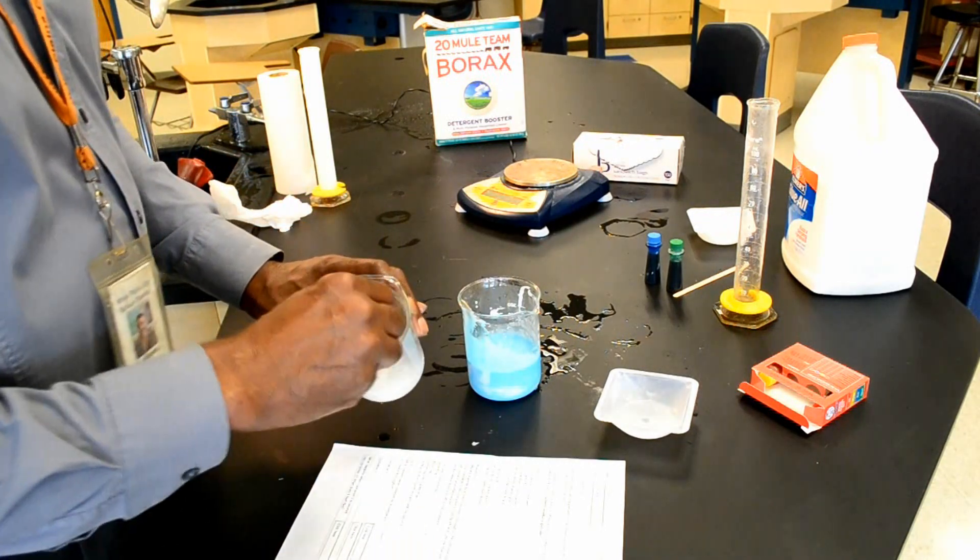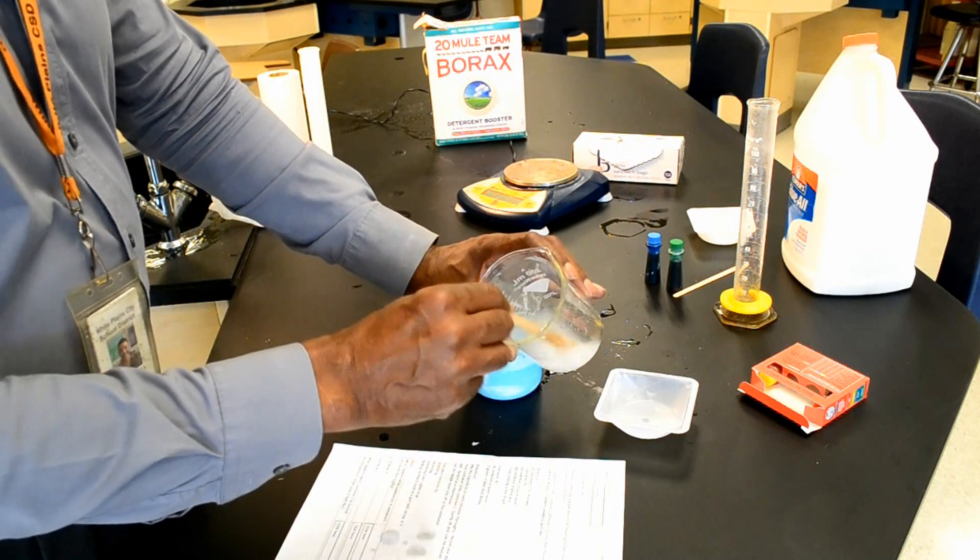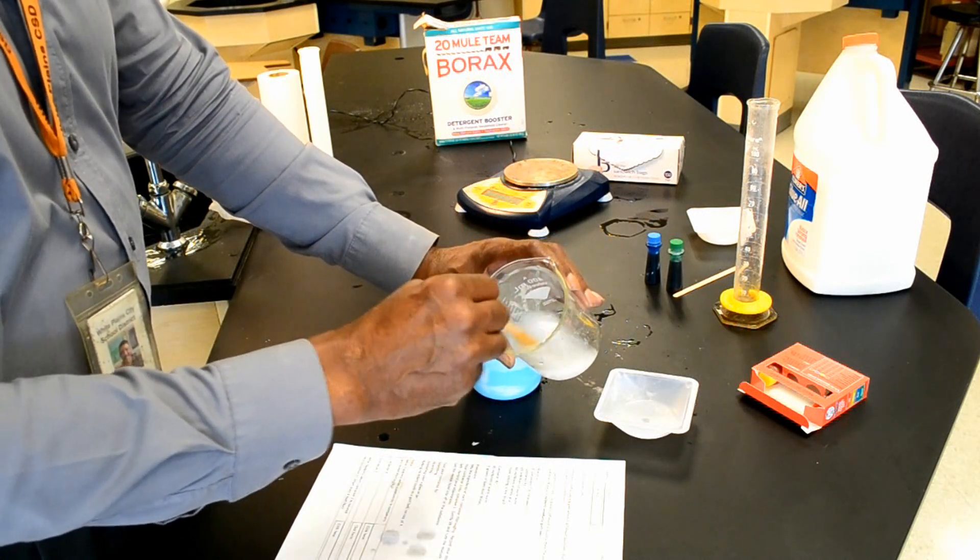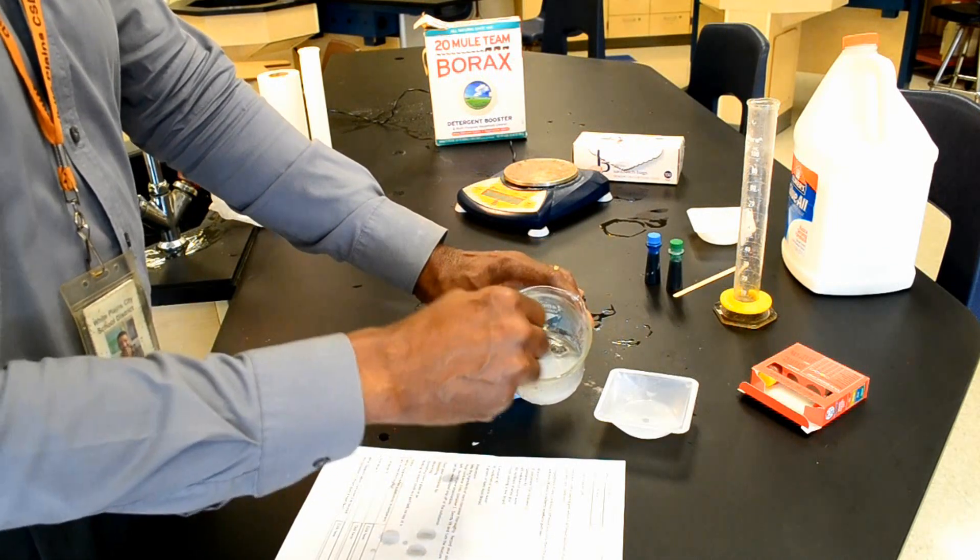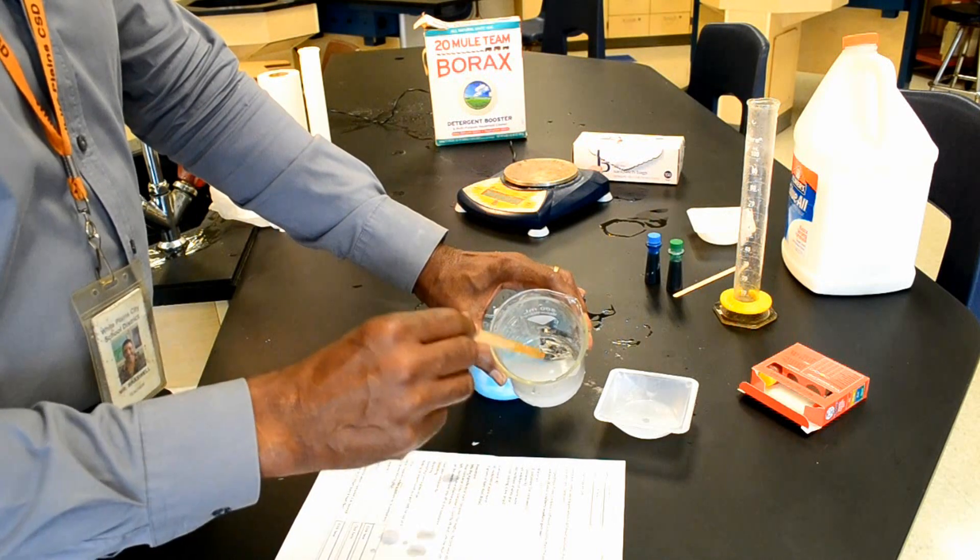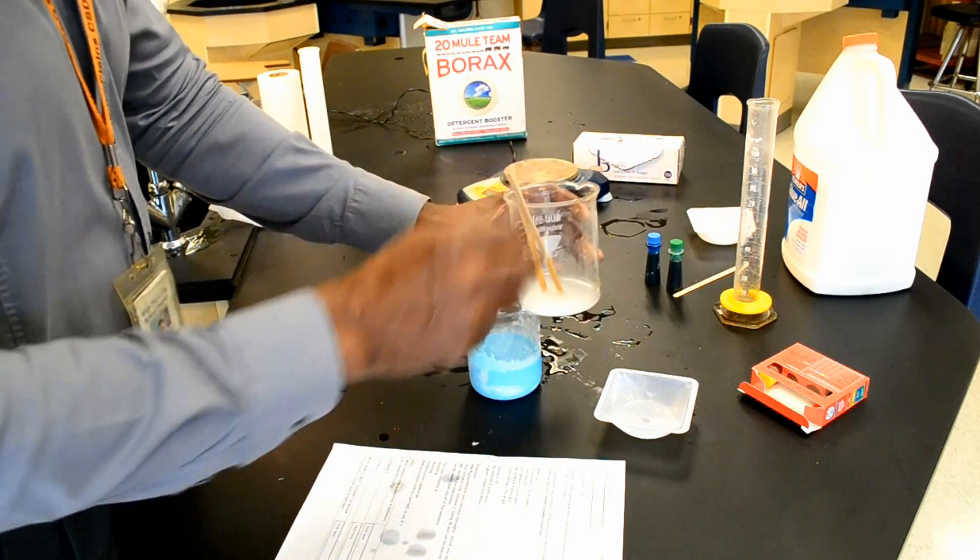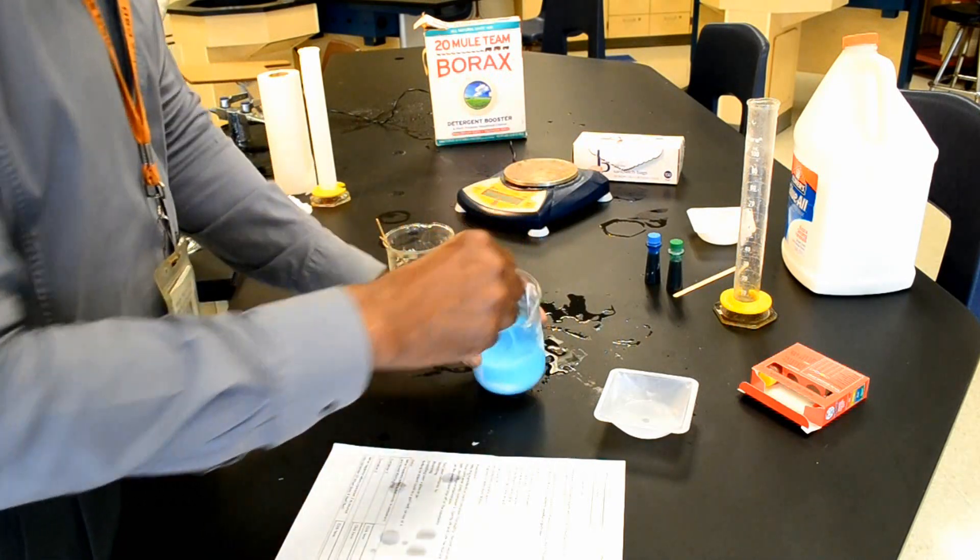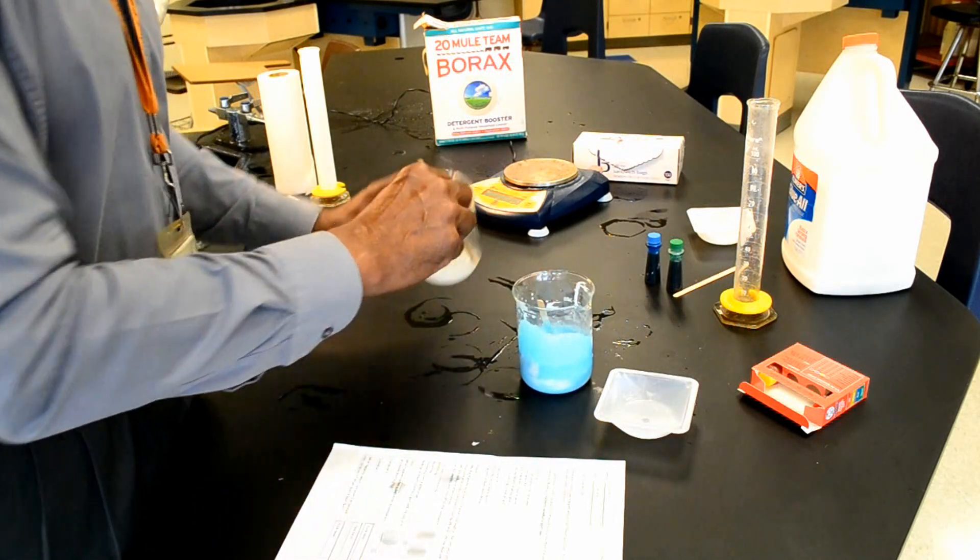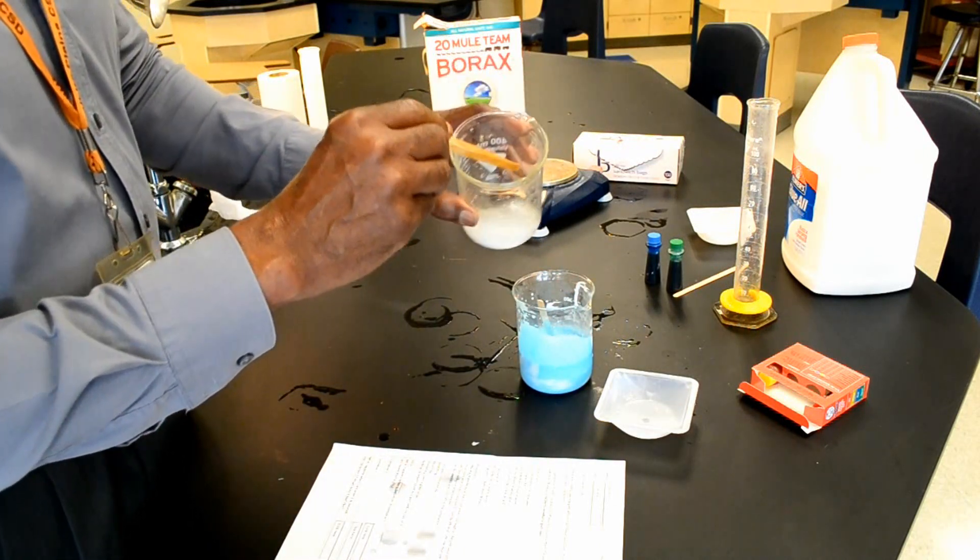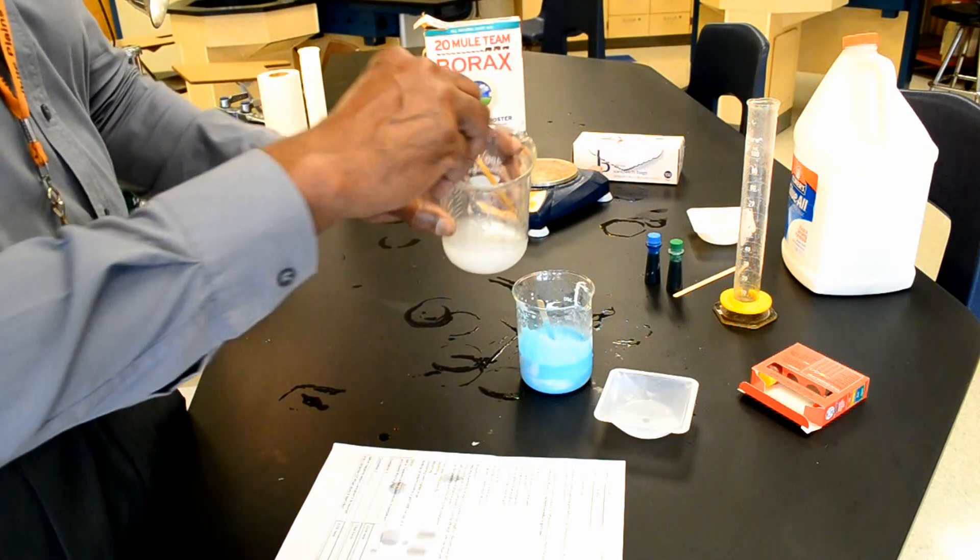I'm going to mix it together, but you can see that the sodium borate actually settles out of the solution a little bit. This is called a heterogeneous mixture, which means that you can actually see some of the individual parts of the mixture. In a homogeneous mixture, it looks very uniform. In a heterogeneous mixture, you can actually see the different parts of the mixture.